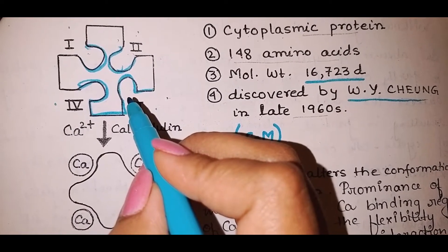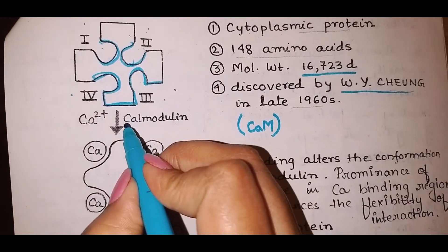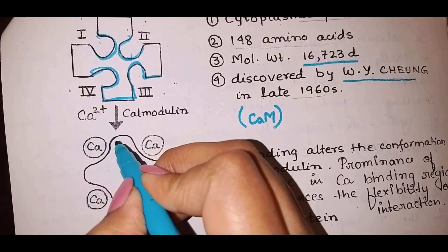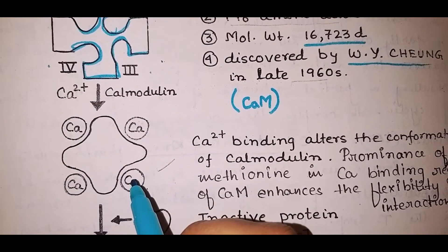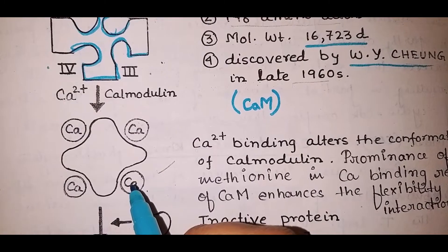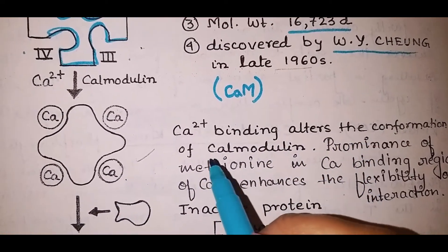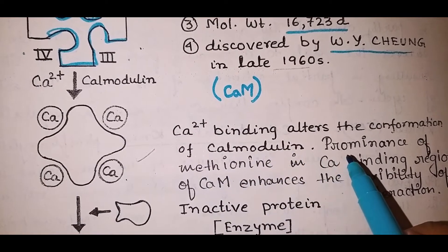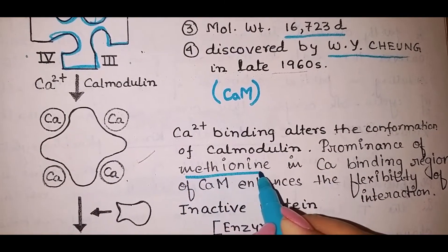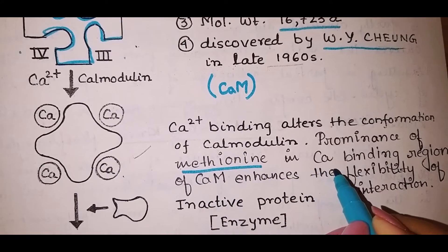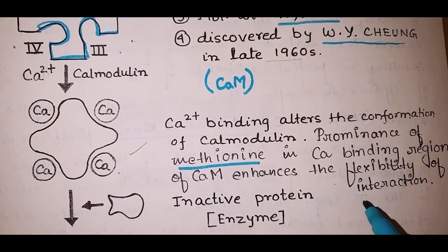Calcium binding alters the conformation of calmodulin. The prominence of methionine in the calcium binding region of CaM enhances the flexibility of interaction.